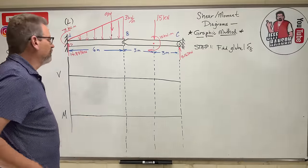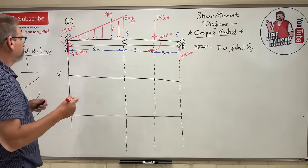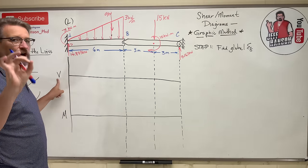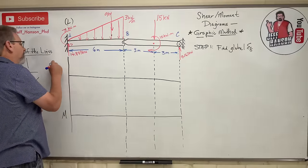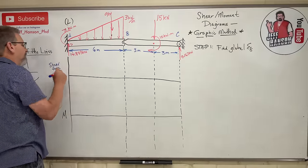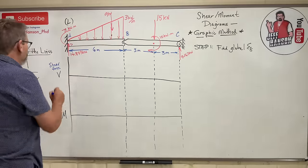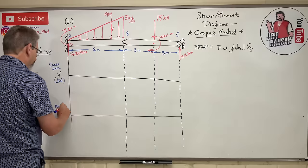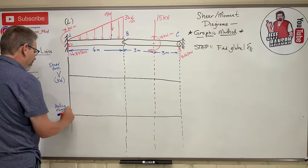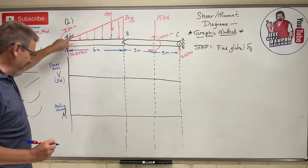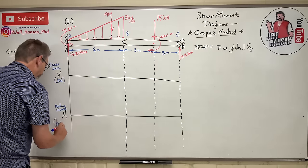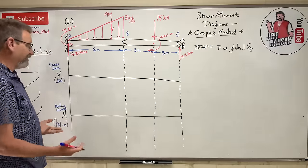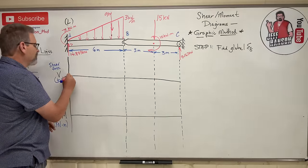Alright, let's draw the V diagram. The units on V are shear force in kilonewtons, and the units on M are bending moment in kN·m. We start at zero. Think of it as a load backpack: you get on the beam and walk across, and things get added to your backpack as you go.